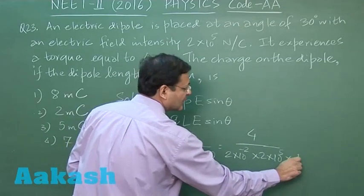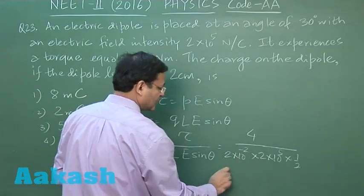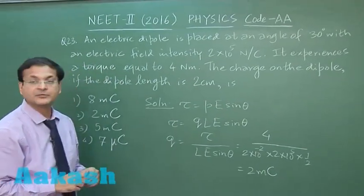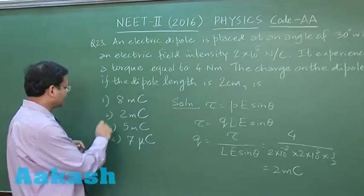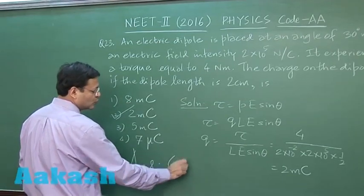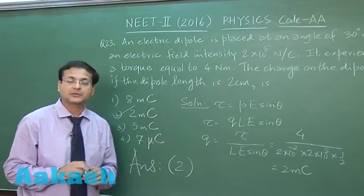So what is sin 30? Sin 30 is 1 by 2. So ultimately you will be getting 2 millicoulomb. You understand, 2 millicoulomb will be the value of charge. So 2 millicoulomb is the second option. So answer will be option number 2 for question number 23.